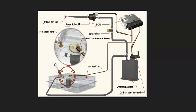The purge valve solenoid opens when the engine's running so the gas vapors go in and get burnt off, and closes when the engine's not running so they don't escape. There's also a fuel tank pressure sensor somewhere inside the system — usually on the fuel pump, but it can be in other locations. The fuel tank pressure sensor is what the onboard computer uses to monitor the whole system, so if that sensor goes bad and sends bad data, the computer might think there's a problem when there isn't.